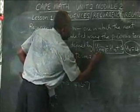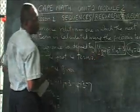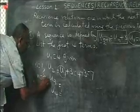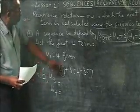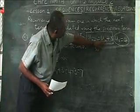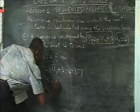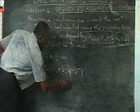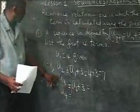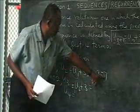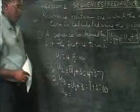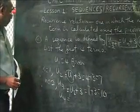For u3, n must become 2 because 2 + 1 = 3. So substituting n=2 into the definition, we get u3 = u2 + 3. Now, u2 is 7, so u3 = 7 + 3 = 10. Things are going along quite well.